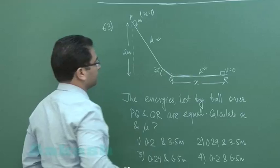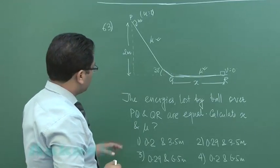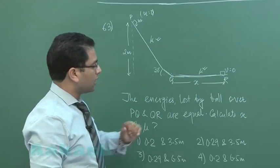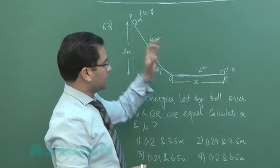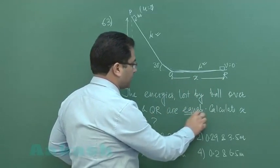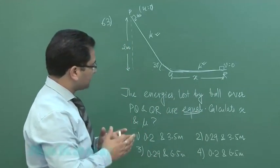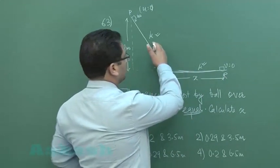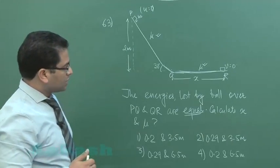Now the energies lost by the ball over PQ and QR are equal. That means the loss in energy here and the loss in energy here, they are equal. That's the first information. On the basis of this, we need to calculate X. X is this distance and the coefficient of friction.